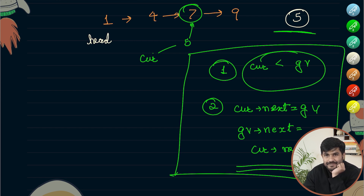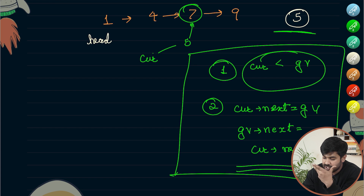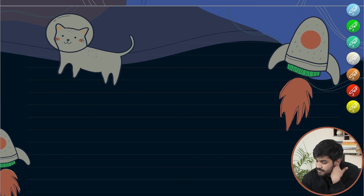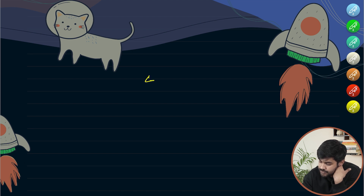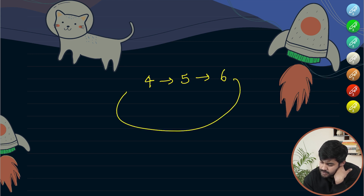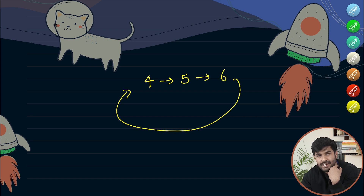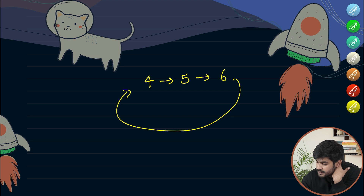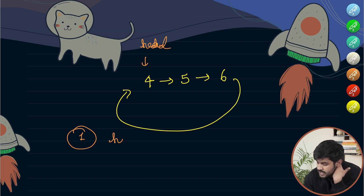What is the scenario when we have the circular linked list like 4, 5, 6 where 6 points back to 4, and the value to be inserted is 3? Here it is a little bit tricky. If it needs to be inserted at the front, this is the head, and the first condition is that head's data is greater than the given value.